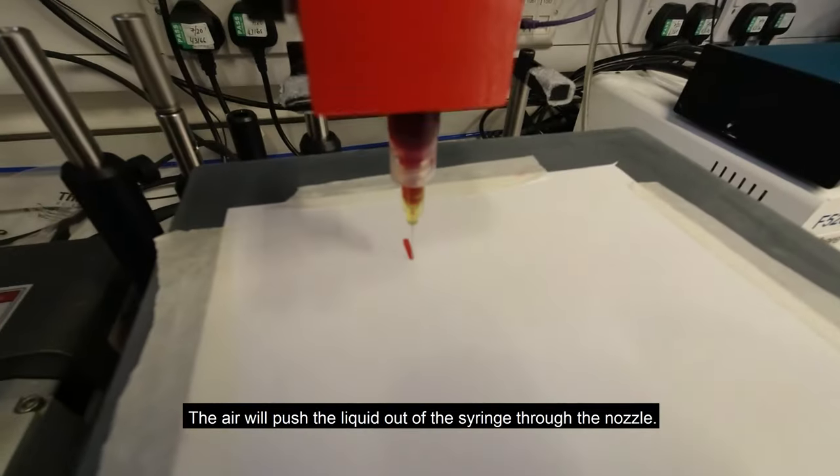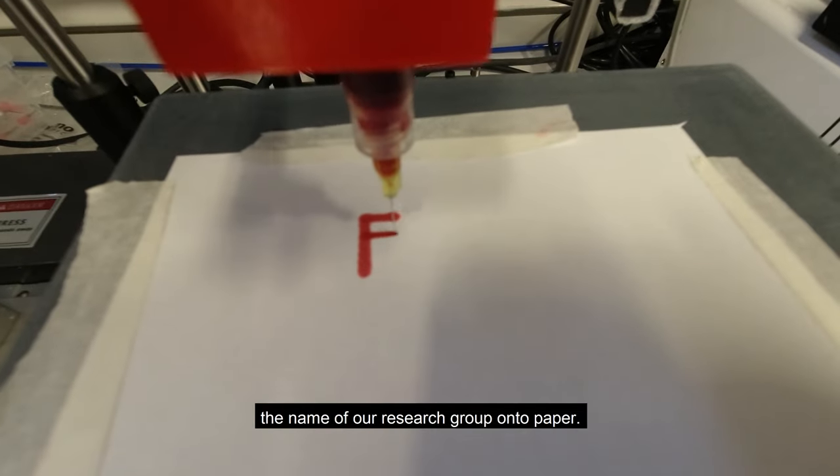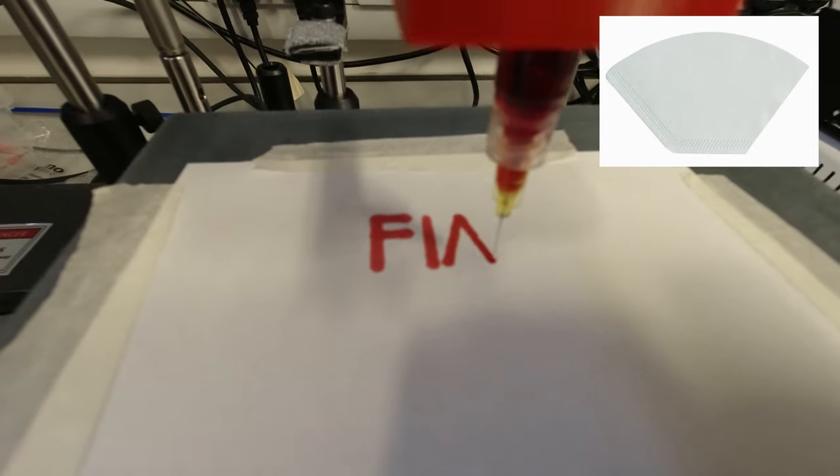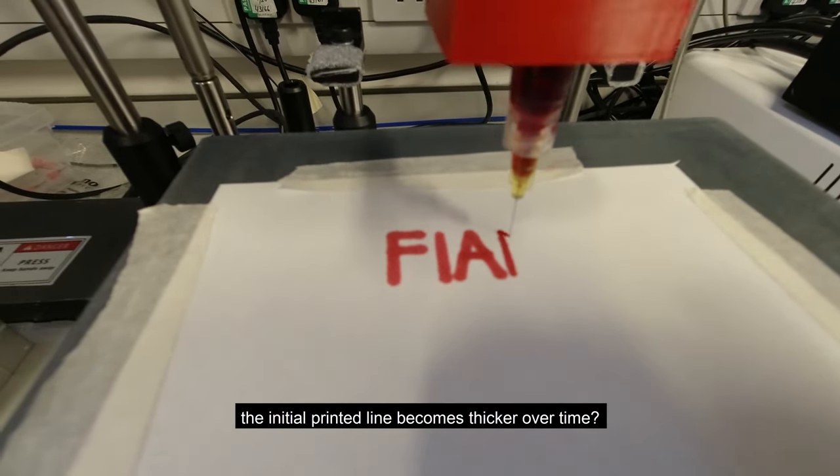We put back the lid that's connected to the air. The air will push the liquid out of the syringe through the nozzle. We've programmed the robot to draw the name of a research group onto paper. This is filter paper, similar to the coffee paper you have at home. Do you see that the red ink spreads on the paper and the initial printed line becomes thicker over time?